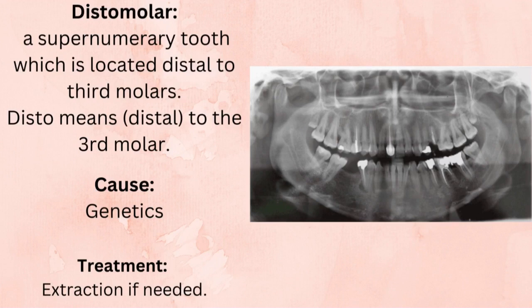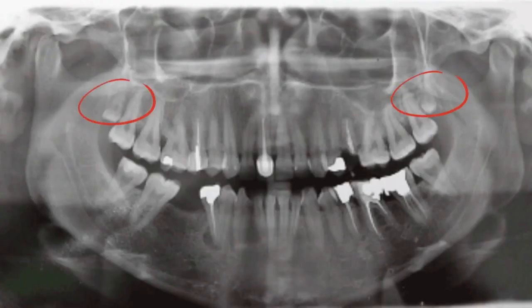Lastly, the distomolar is a supernumerary tooth located distal to the third molar. As the name suggests, 'disto' means distal to the third molar. The cause is also genetics, and the treatment is extraction only if needed.